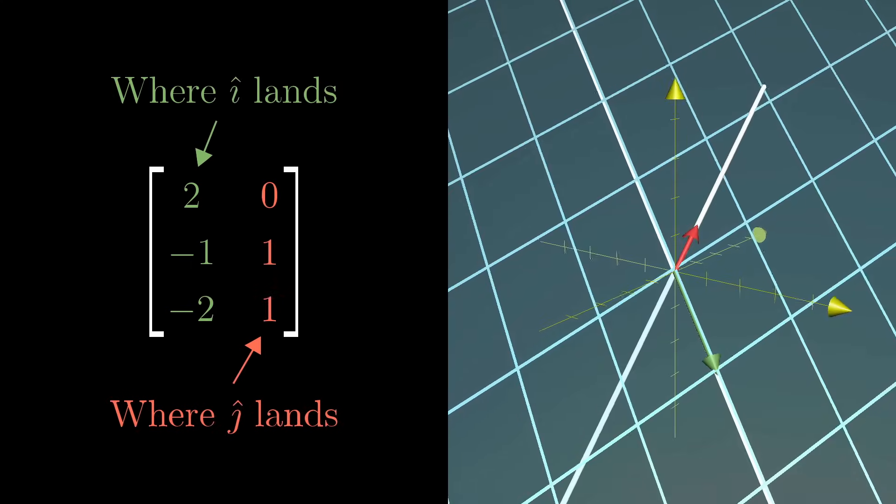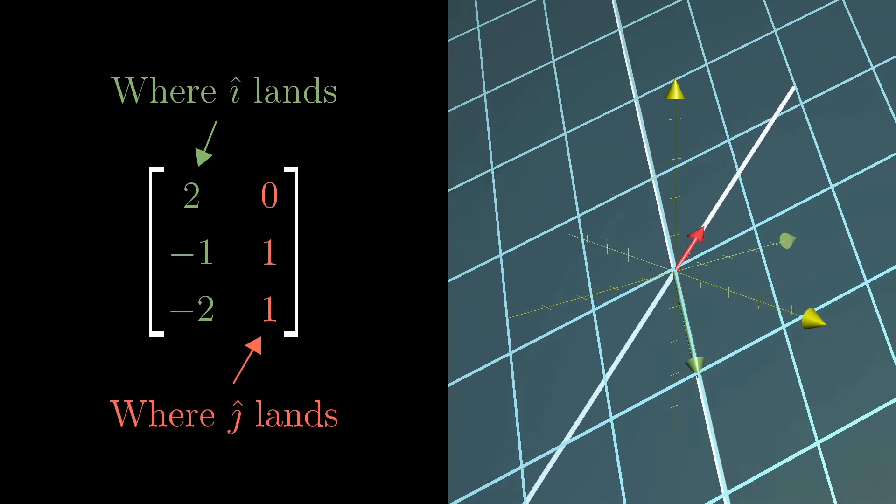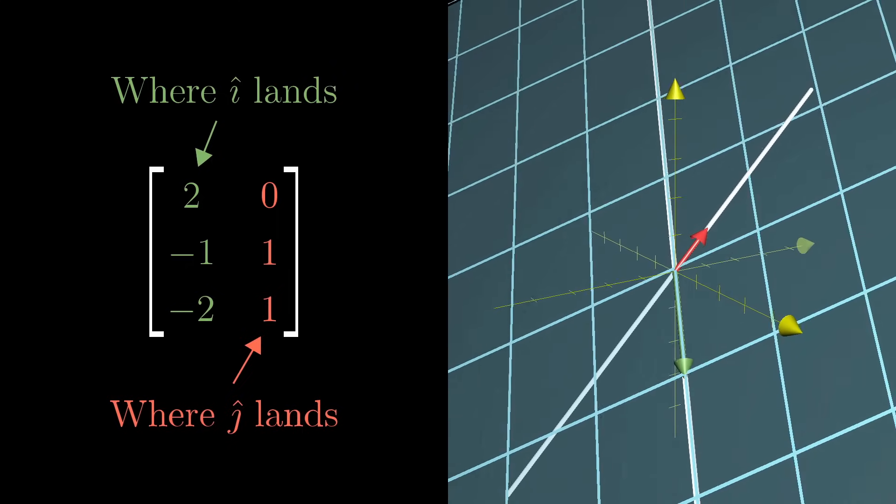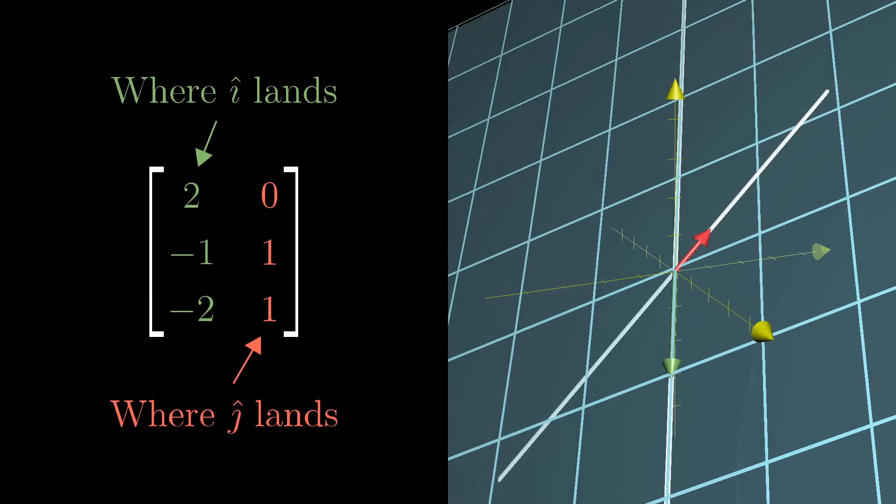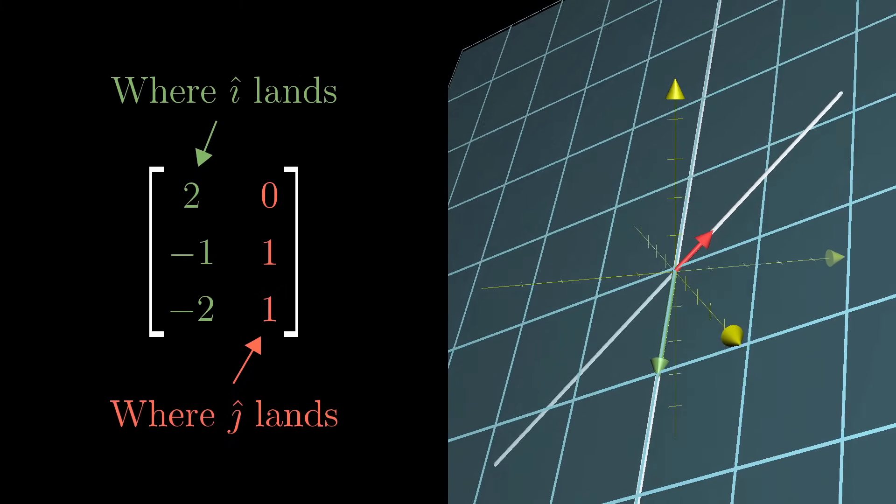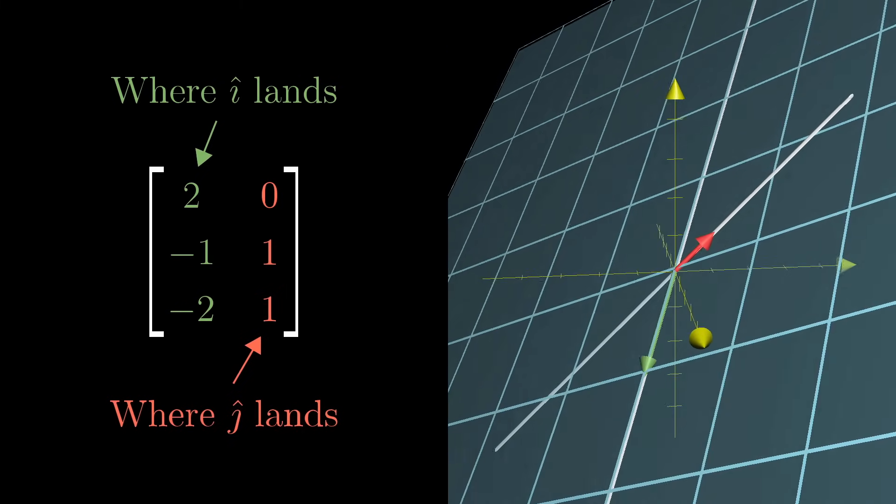Encoding one of these transformations with a matrix is really just the same thing as what we've done before. You look at where each basis vector lands, and write the coordinates of the landing spots as the columns of a matrix. For example, what you're looking at here is an output of a transformation that takes i-hat to the coordinates. Notice,